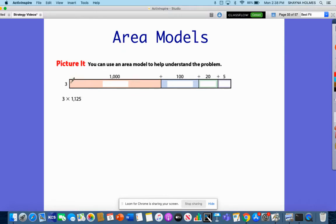In this area model, you're usually going to see a rectangle of some various size. For this problem, I'm going to be multiplying 3 times 1,125. That's a pretty big number, but I'm going to break this down into a simpler problem.